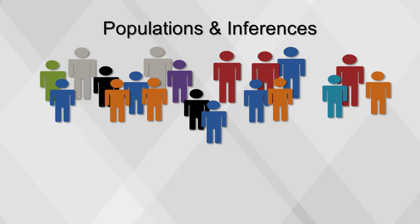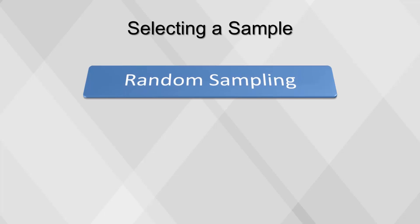We will focus on selecting a sample using probability. A probability sample is chosen from a population using a random mechanism. There are two types of probability sampling: stratified and cluster.